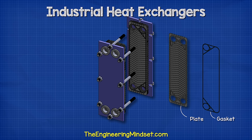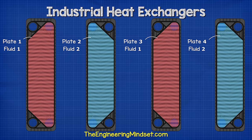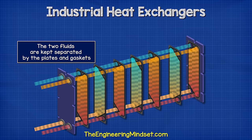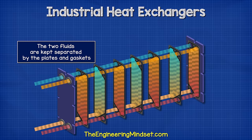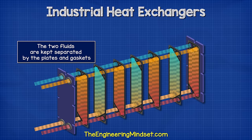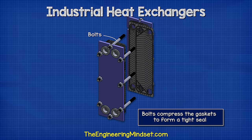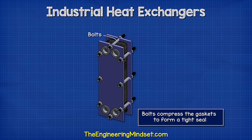The gaskets separate the plates, creating a thin channel between them through which fluid flows. On each plate, the gasket blocks two of the four ports, meaning only one fluid can enter and exit. The next plate allows the second fluid to pass. This alternates throughout the heat exchanger, keeping the two fluids completely separated — only thermal energy flows through the sheets. The entire unit is held together with long bolts, which compress the gaskets to form a very tight seal.